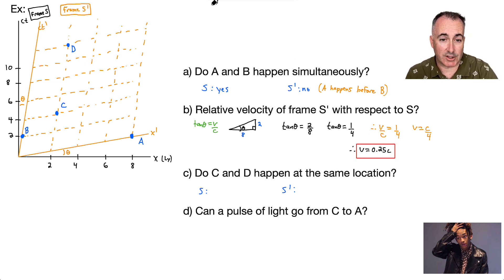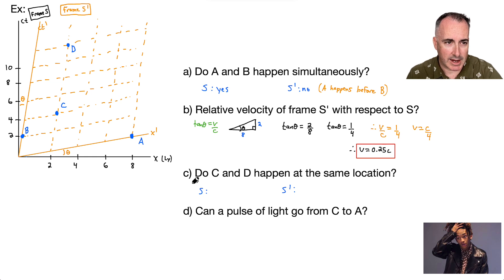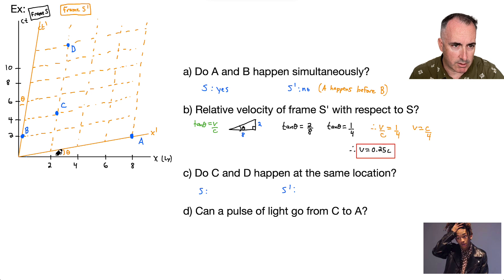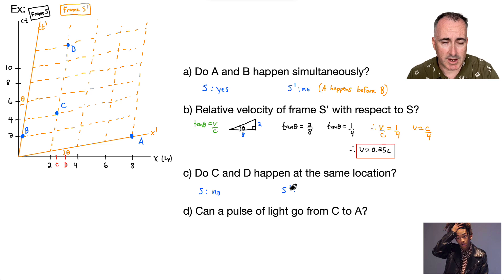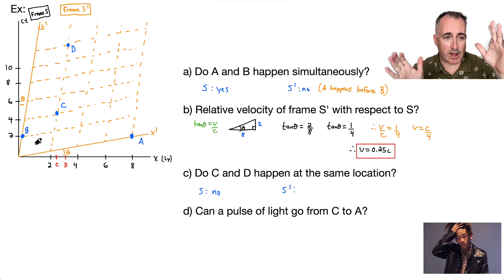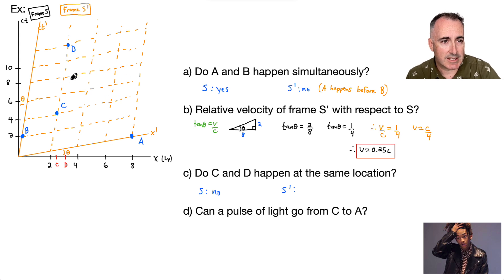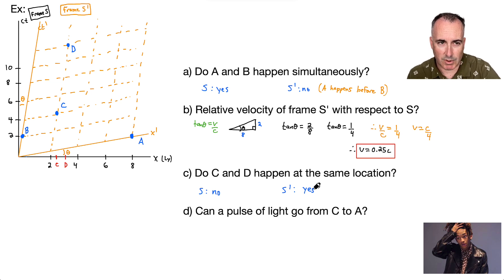Now part C: do C and D happen at the same location? In frame S — thinking about the black axes — C is over here and D is somewhere else, so no, they do not happen at the same location in S. How about in S primed? Ignore the black and think about orange. Notice that C and D are lying on the same CT primed line — that means they're at the same position. So yes, these occur at the same location in S primed.